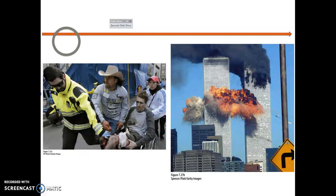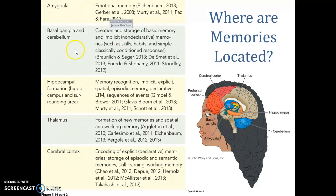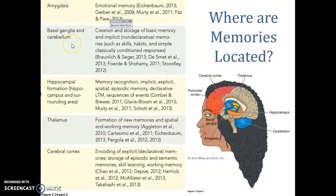Understanding that our memory is so tied to the emotions we experience is very important. Our brain has different areas responsible for explicit and implicit memory storage mechanisms. The hippocampus is a very important part, but the amygdala relates emotions to memory. The cerebrum, along with the basal ganglia, is more important for skills, habits, and things from motor or non-declarative implicit memory.